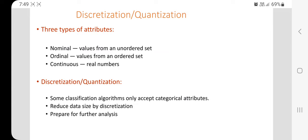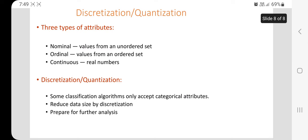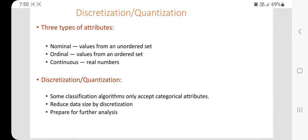Discretization is especially useful because some classification algorithms only accept categorical attributes. It reduces data size through discretization and prepares data for further analysis. These are all the phases of data pre-processing. When working on data, we must first pre-process it by applying these techniques. Thank you.